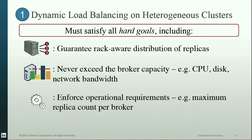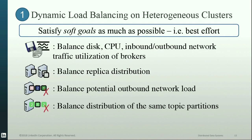Capacity enforcement ensures that resource utilization over brokers never exceeds a certain predefined threshold — resources here could be CPU, disk, or network bandwidth. Enforcing operational requirements ensures that Kafka clusters always operate within predefined limits, such as always being under some maximum replica count per broker. Contrary to hard goals, soft goals are best effort and typically require evenly balancing some metric X over brokers — this X could be resource utilization, number of replicas, or number of partitions from the same topic.